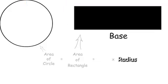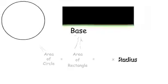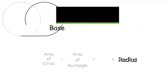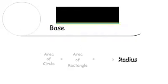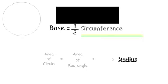To find the base, we need to look at the circumference of the circle. When we compare the base and the circumference, we can see that the base is equal to one half the circumference.